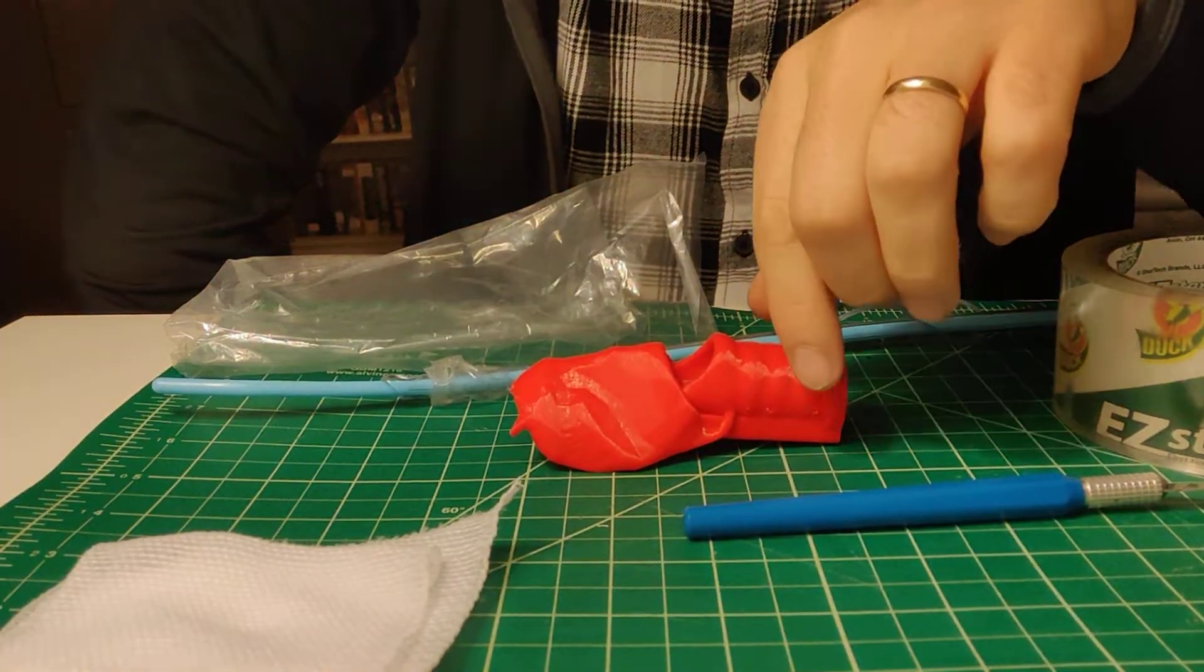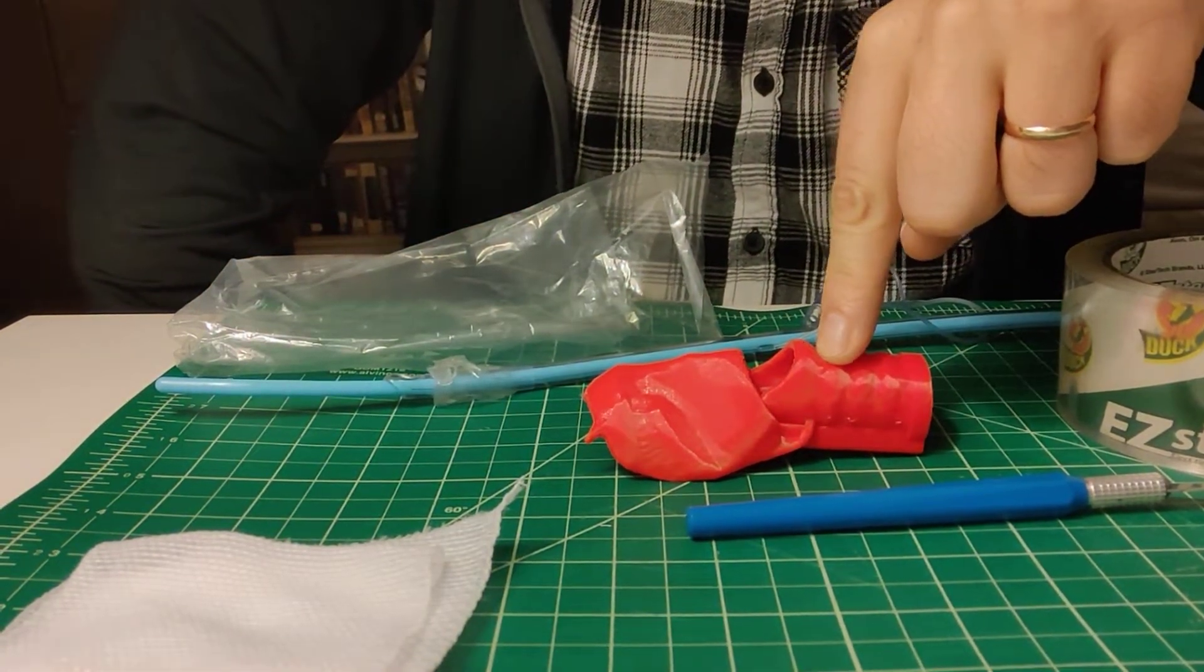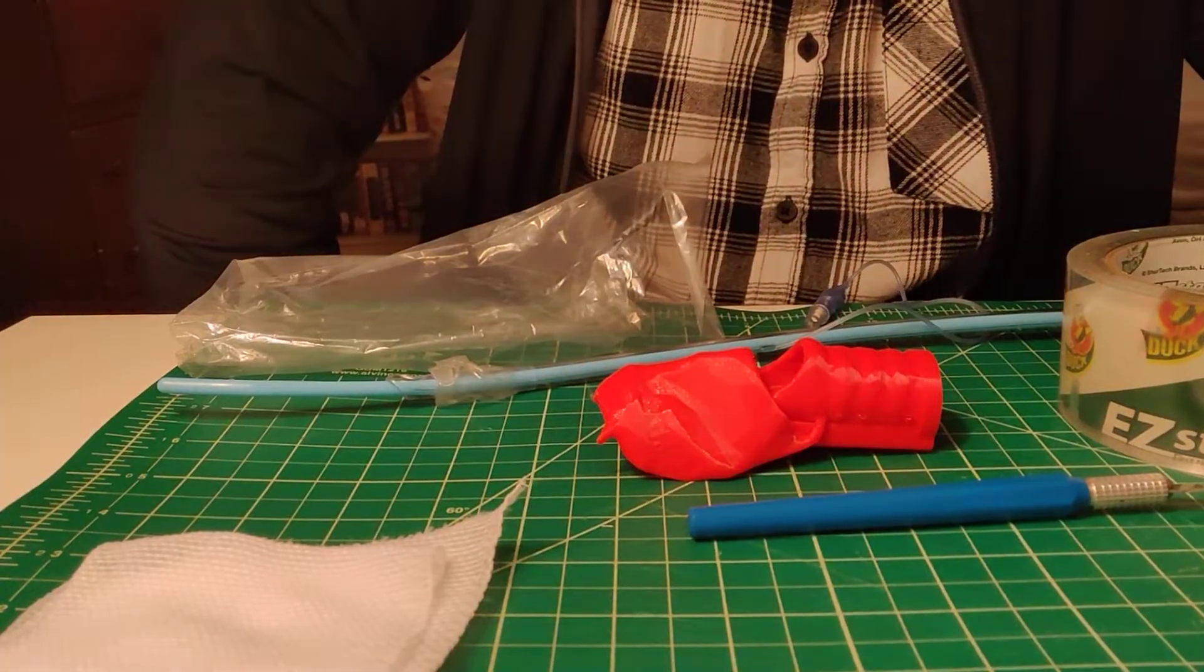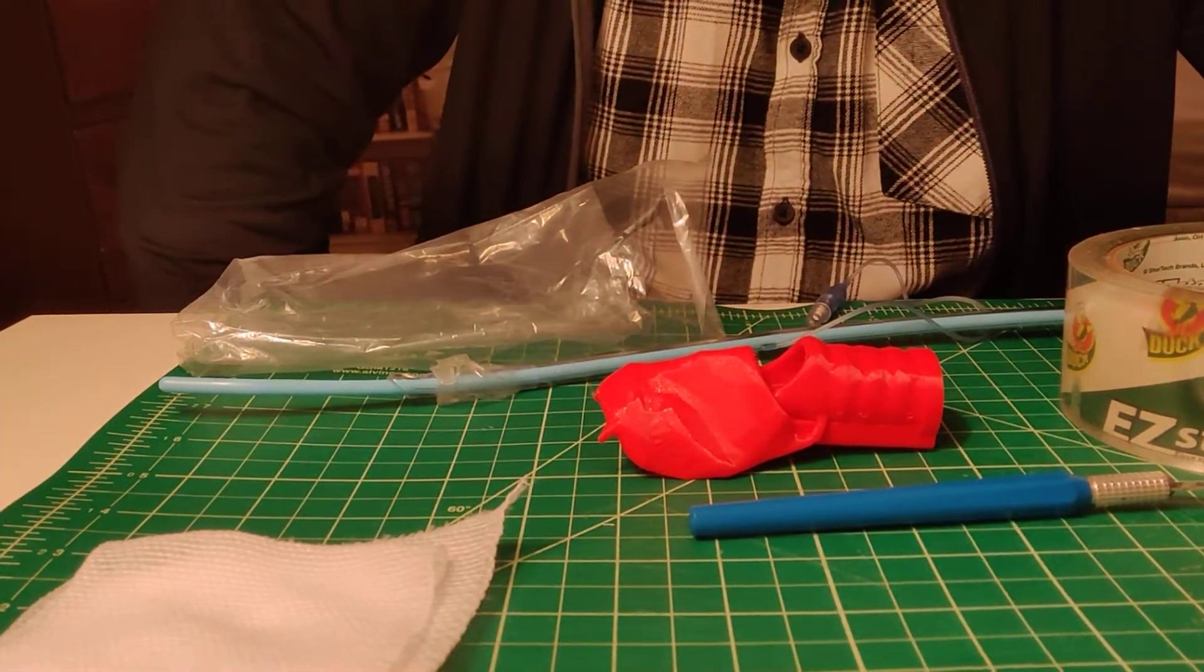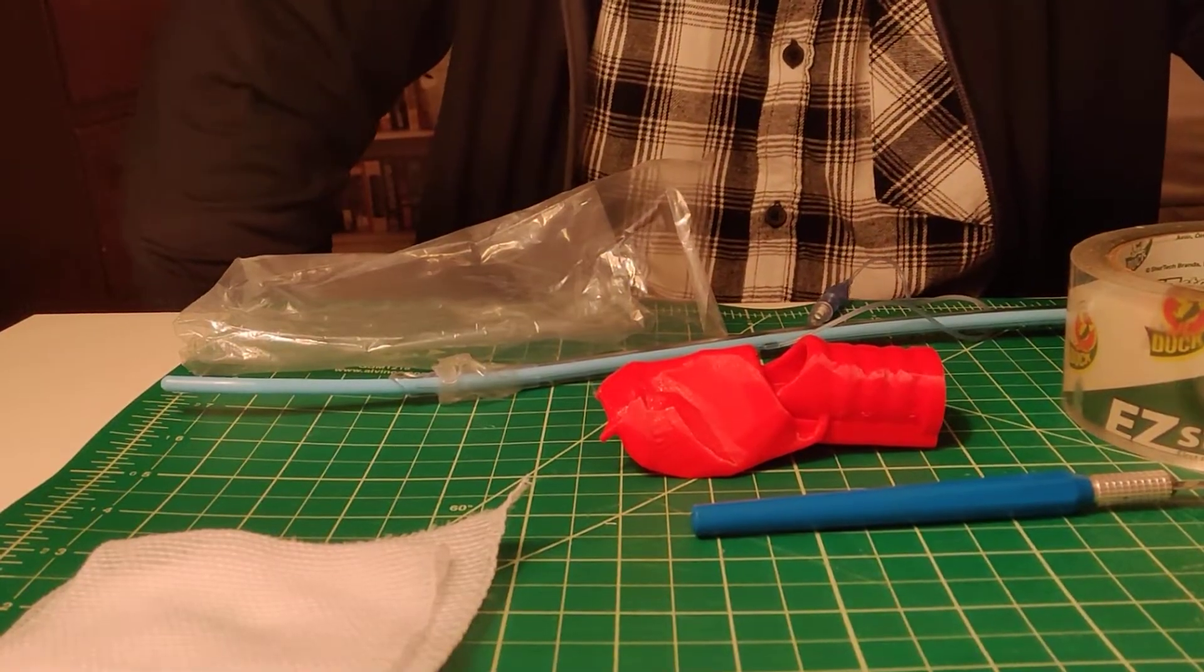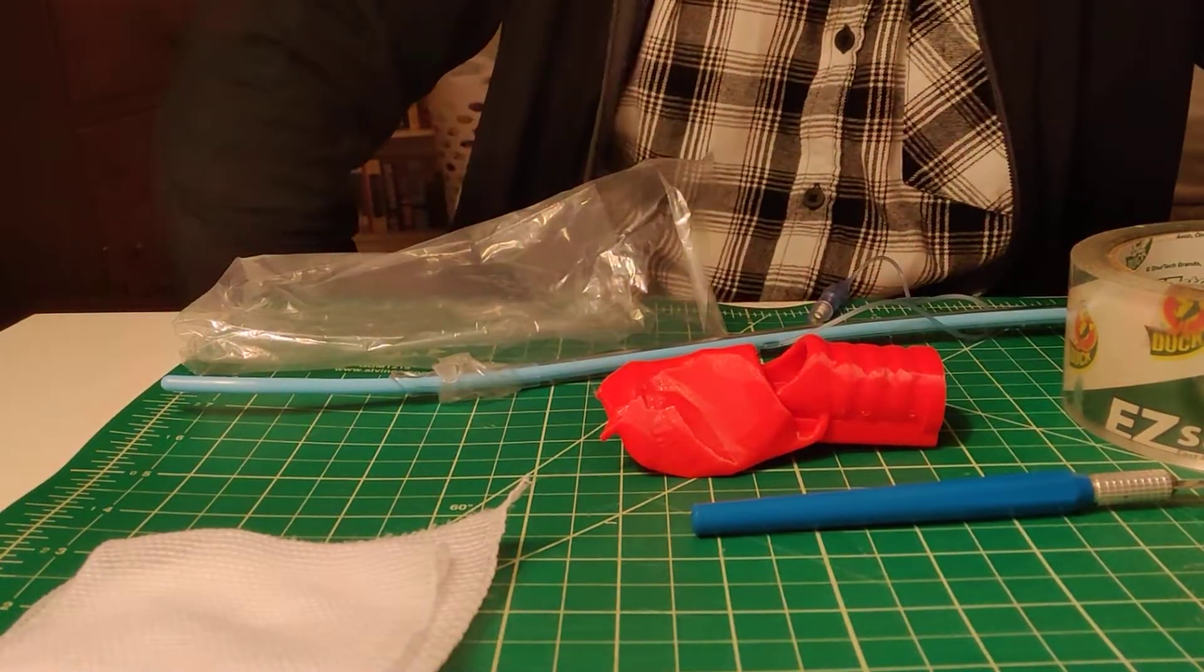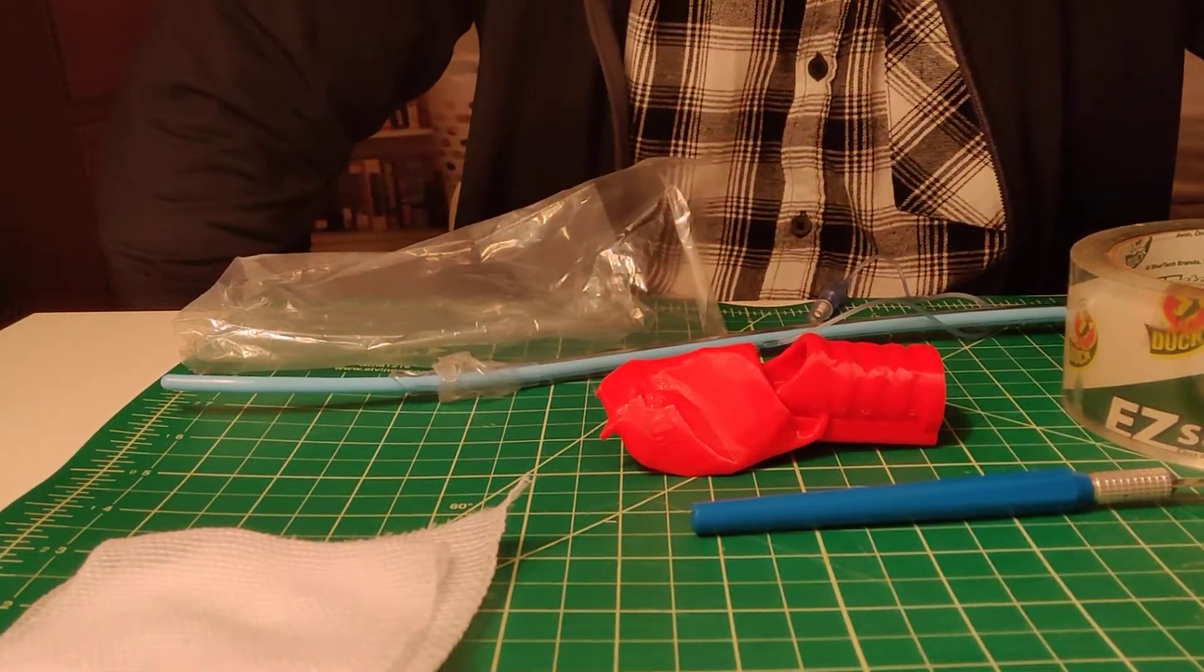I wanted to go over with you guys today how to train cricothyroidotomy using a 3D printed crike. I'm following the technique that Scott Weingard from EM Crit shows. It's super easy, super cool. I'll post a link in the description to his website which goes over all of this as well and has a lot of extra resources. I highly recommend it.